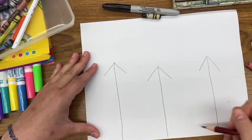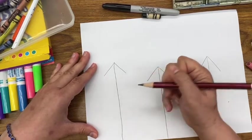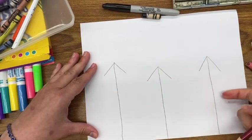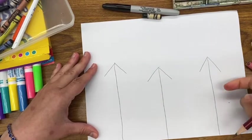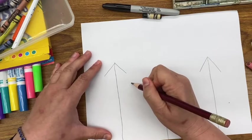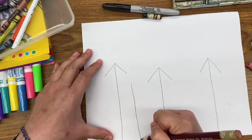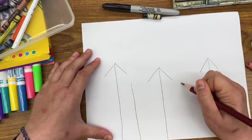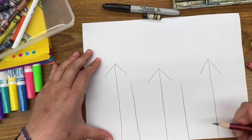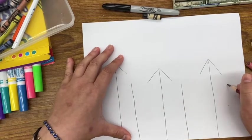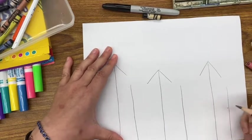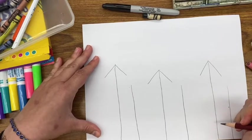So I'm going to draw a vertical line here, another vertical line, and another vertical line. They're about the same length. And you're going to do the same thing.